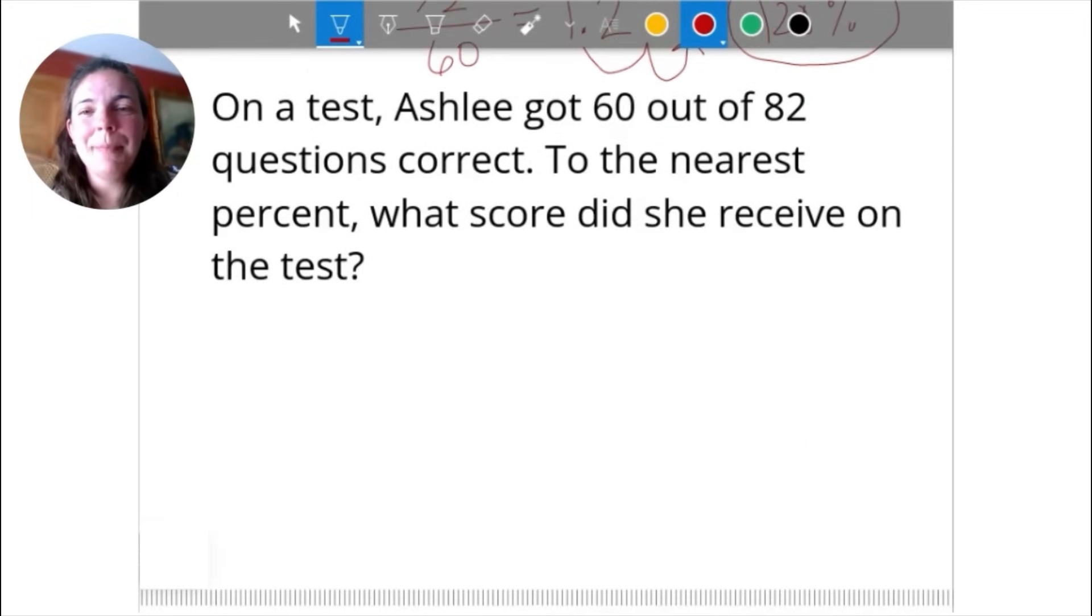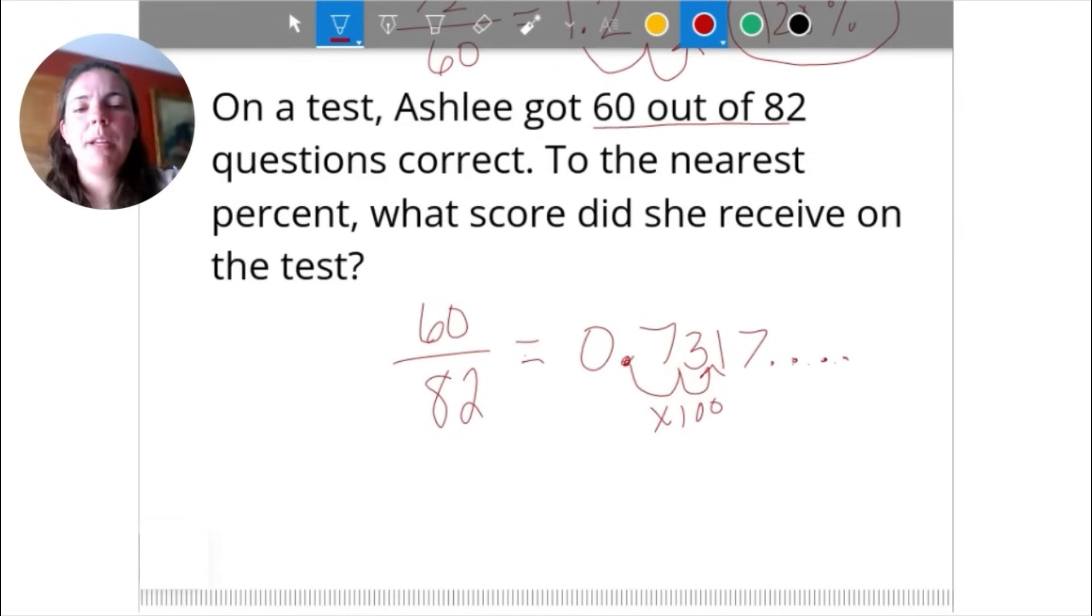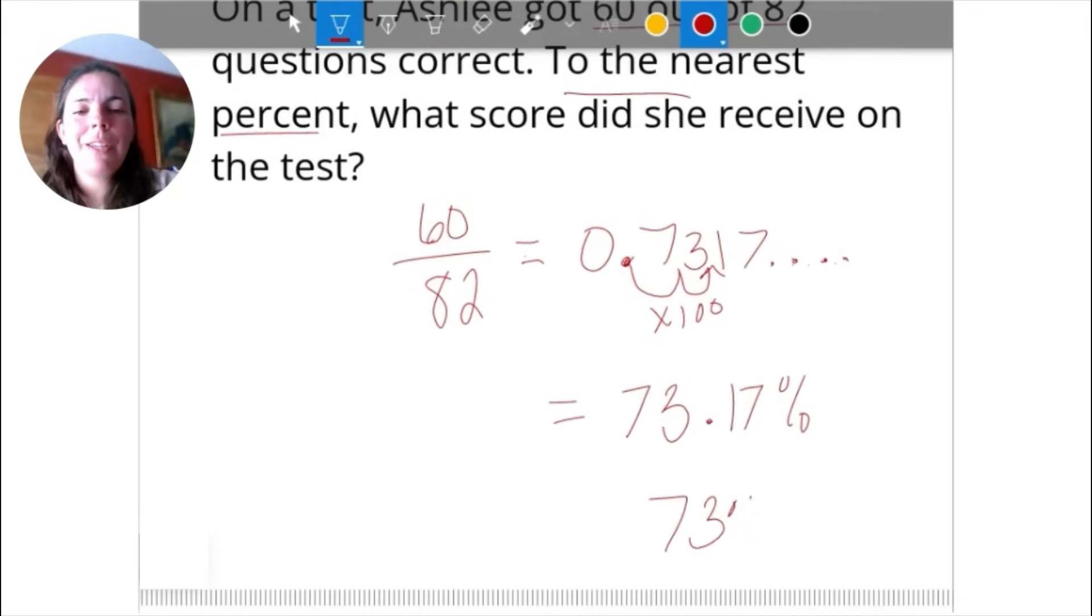Here is a word problem. On a test, Ashley got 60 out of 82 questions correct. To the nearest percent, what score does she receive on the test? 60 out of 82 is our ratio. We write that as a fraction to turn it into a percent. We're just going to divide 60 divided by 82. When I do that, I get 0.7317. If I turn my decimal into a percent, you can think about this as multiplying by 100. Remember percent is out of a hundred. This gives me about 73.17 percent, but I need it to the nearest percent, so that would be 73 percent.